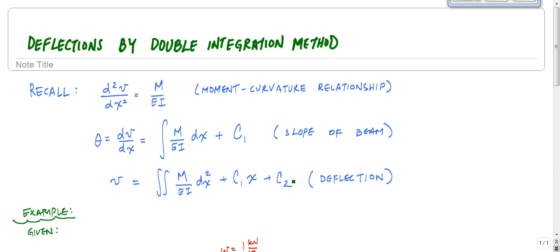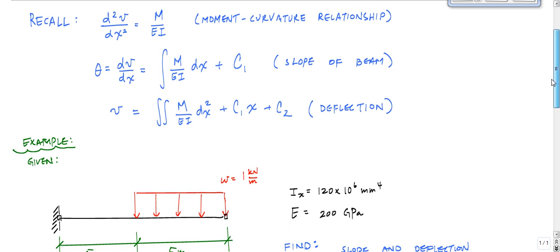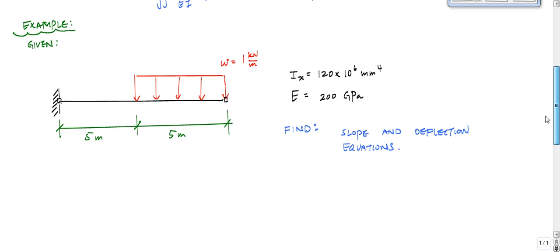You'll see C1 times x plus C2, again, more constants of integration. The challenge here is in this problem, is coming up with moment functions and solving for boundary conditions. That's always the biggest challenge, right? And I'm going to give you some tools to help you. So let's do this example problem. Hopefully this will be useful.